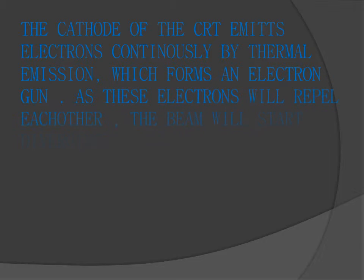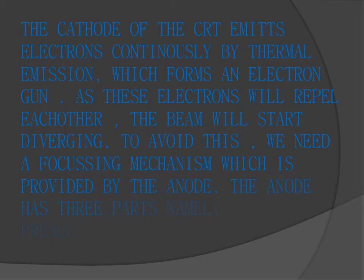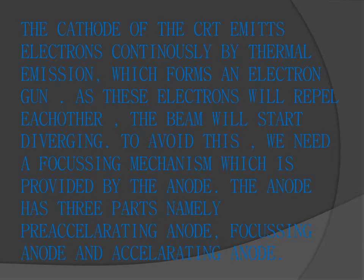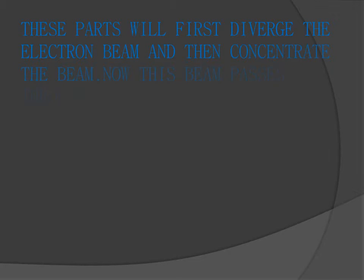The cathode of the CRT emits electrons continuously by thermal emission, which forms an electron gun. As these electrons repel each other, the beam will start diverging. To avoid this, we need a focusing mechanism which is provided by the anode. The anode has three parts: namely, pre-accelerating anode, focusing anode, and accelerating anode. These parts will first diverge the electron beam and then concentrate the beam.